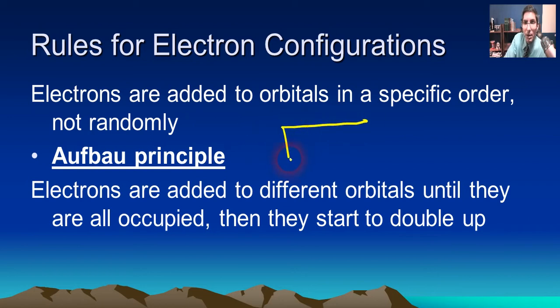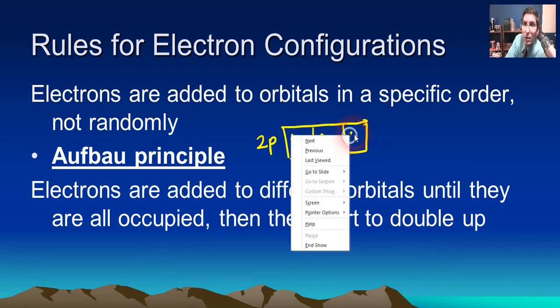You might remember in a previous video, we had, I think this was the 2p sublevel. And the first electron we added to this orbital, and then the second one, we didn't add to the first orbital rather. We added it to the second orbital. I think that was for carbon. And then the third one went in here.